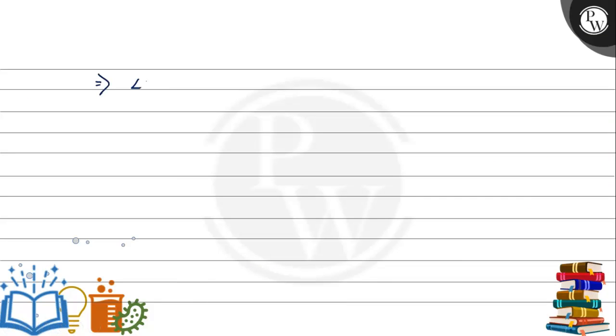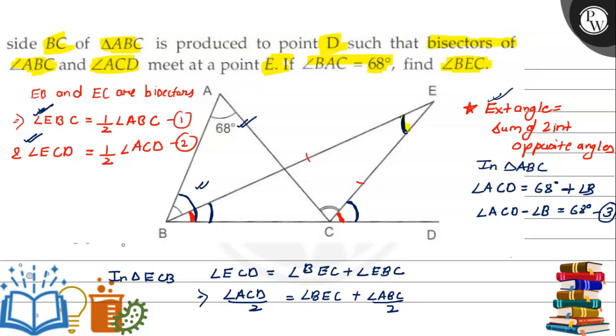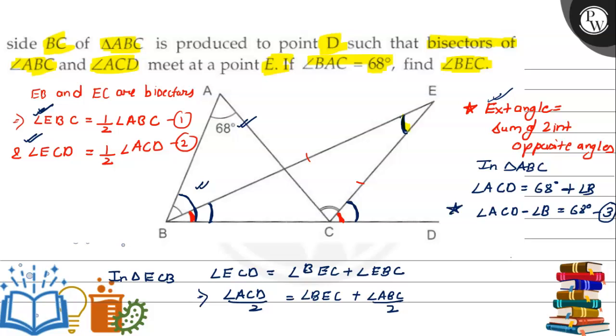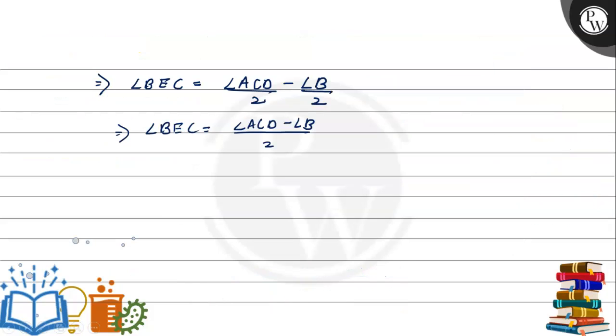This implies angle BEC equals angle ACD by 2 minus angle ABC by 2, which is angle B by 2. Angle BEC equals angle ACD minus angle B, all divided by 2. From equation 3, we know that angle ACD minus angle B equals 68 degrees. This means angle BEC is 68 degrees divided by 2. When we solve this, we get angle BEC is 34 degrees.